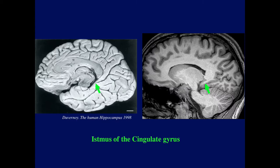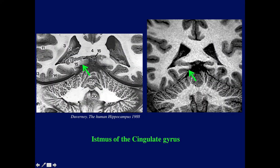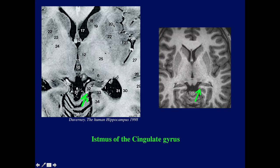Now let's move on to the isthmus of the cingulate gyrus. The isthmus is a narrow area of connection between the cingulate gyrus and the parahippocampal gyrus. Here we can see it on MR — this thinning of the cortical connection between the two gyri. We can also identify it on the coronal plane. This is the region of the isthmus cinguli. On the axial plane, we can see it just lateral to the collicular plate or the quadrigeminal plate.